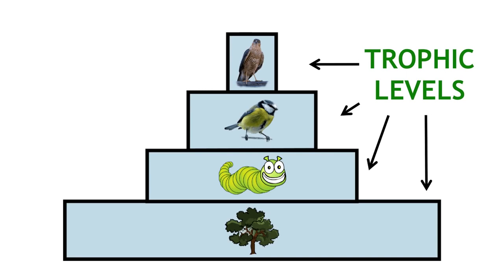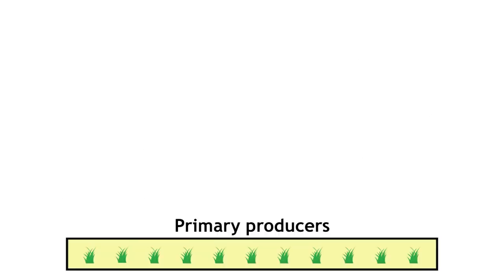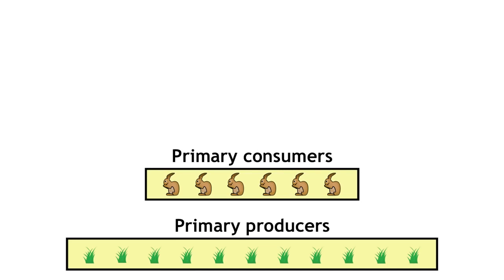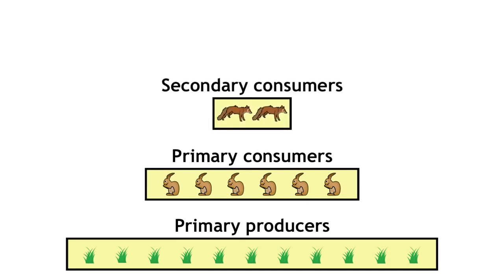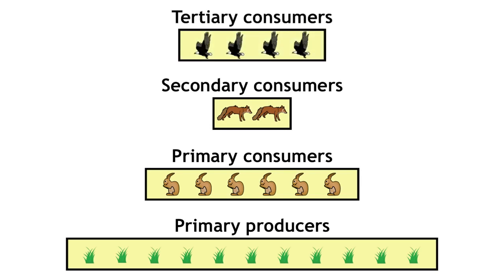So how does that work? Well, the bottom of the pyramid represents the primary producers, the first trophic level. On top of that go the primary consumers, the second trophic level, and so on up through the secondary consumers, tertiary consumers, until you reach the highest trophic level in that ecosystem.